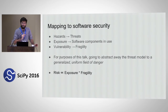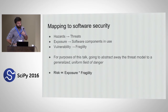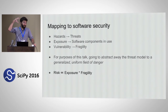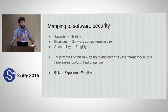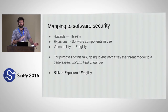How can we map this onto questions of software security? For hazards we have security threats of all kinds, for exposure we've got software components in use, and for vulnerability we have fragility in some sense. For the purpose of this talk I'm abstracting away a lot, zooming in from a bird's-eye view. I approach this complementarily to the way most security research works, which starts with a very specific threat and builds up from there. Because we're abstracting threats into a generalized uniform field of danger, we can simplify and say risk is proportional to exposure times fragility.